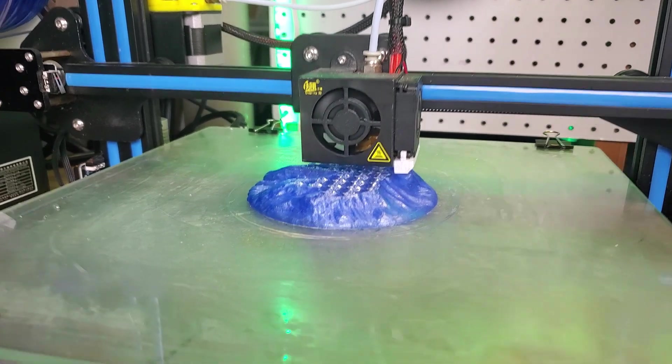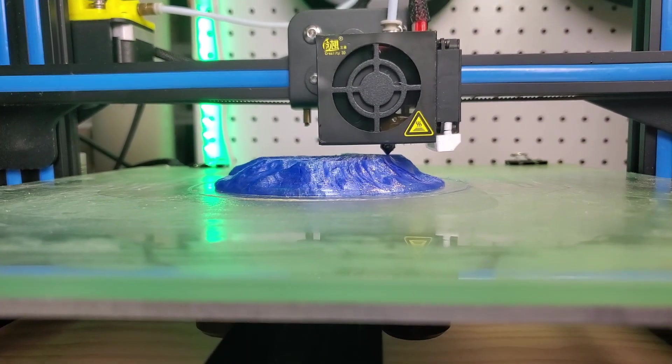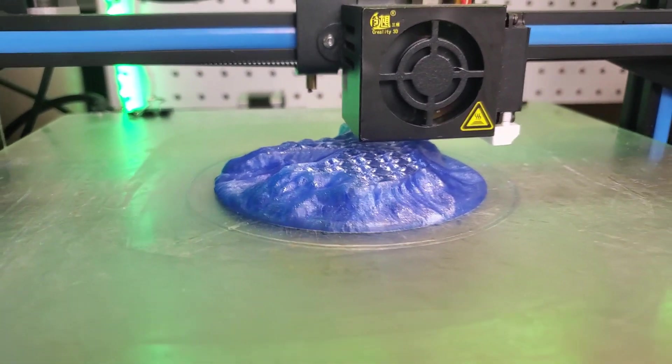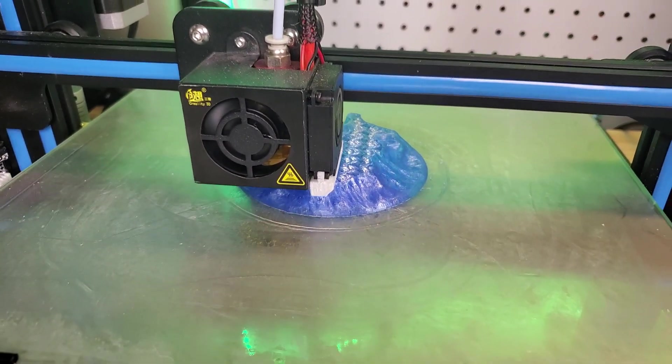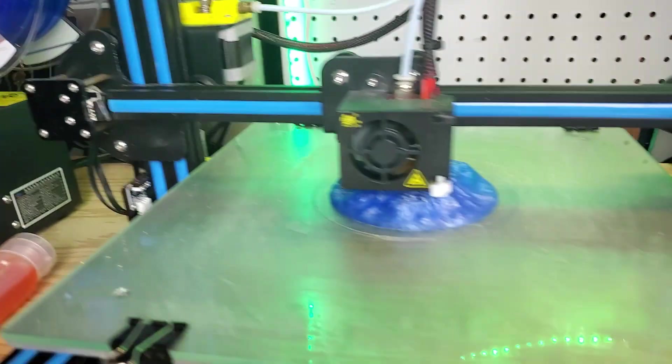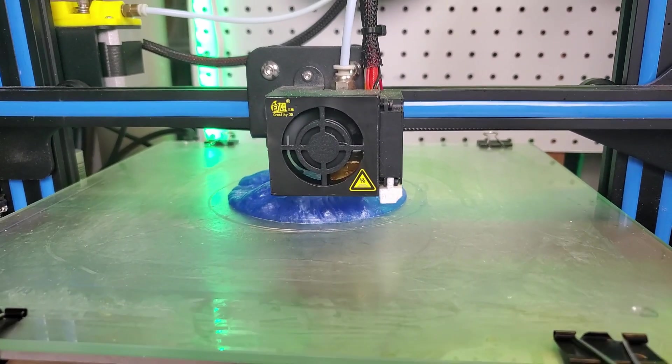It looks like we're about halfway done, and so far it looks fantastic. There is nothing popping off the bed at all, everything's sticking perfectly. If you can check again, the bed is at zero or it's room temperature, but the bed is set at zero.